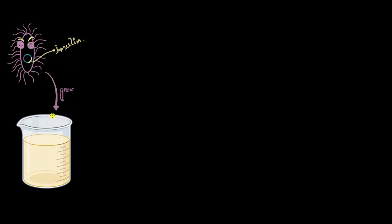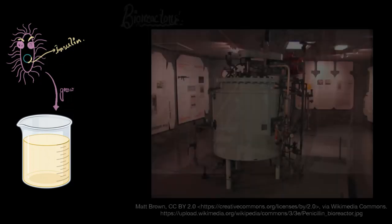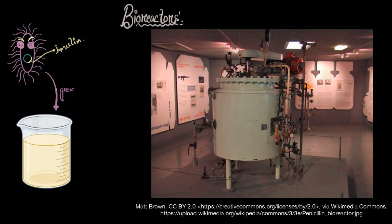Will you still use a small beaker to produce insulin? Using hundreds and thousands of beakers would be a very inefficient process. So in cases where we need to mass produce bioproducts, scientists use something called bioreactors.